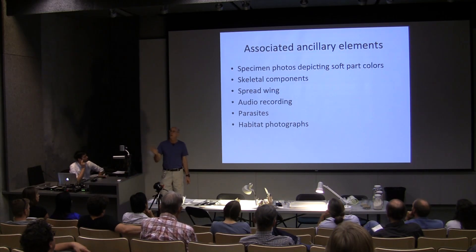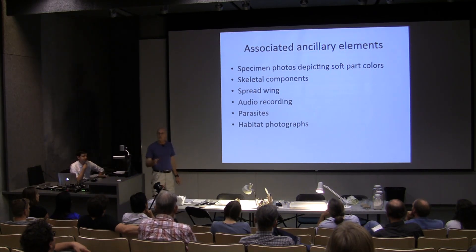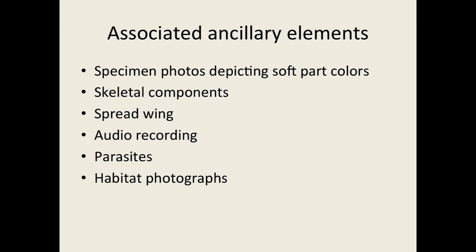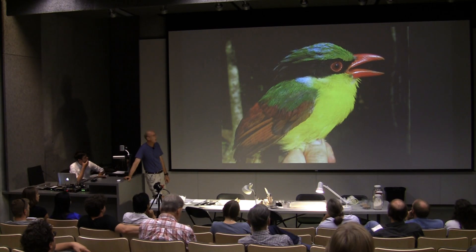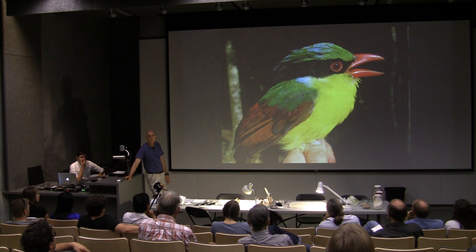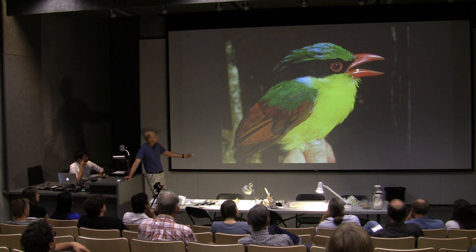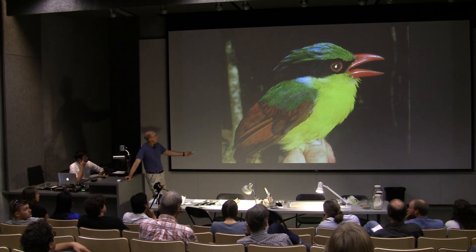In addition to those core data, we often have ancillary information. This wonderful bird is an Indochinese green magpie from southern Vietnam. It's not only spectacular in plumage, but it has really neat vocalizations. What I want to point out in this slide is the bright red bill, the red eye ring, and the reddish-brown irides.